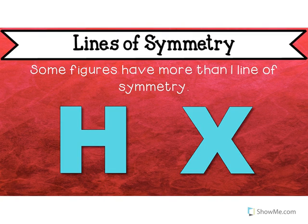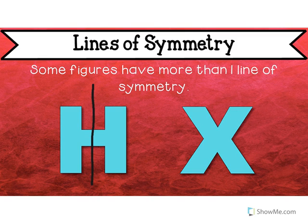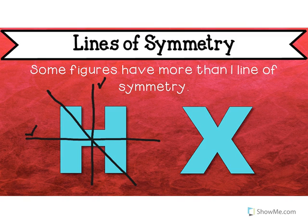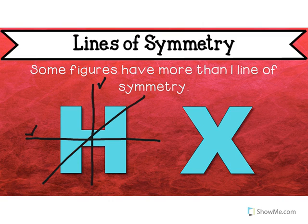Some figures have more than one line. If I drew it in half right here, would it be the same on both sides? Yes, it would. What if I drew it right here? Would it be the same on both sides? Yes. Let's try diagonal though — would it be the same? No. Let's try this way — would it be the same? No. So this one had two lines of symmetry.